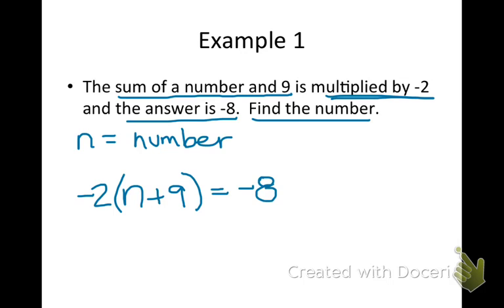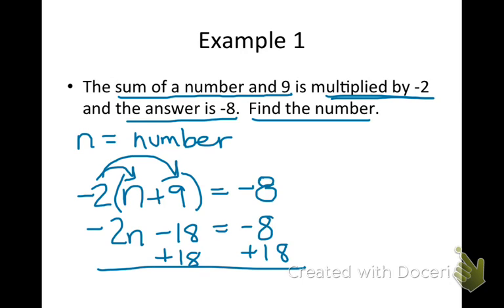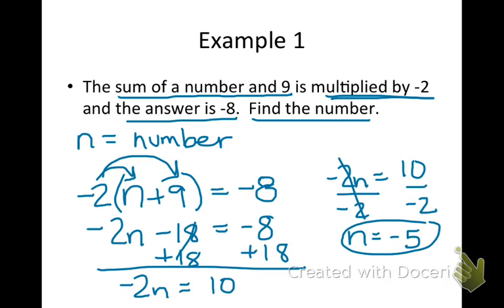And now you solve. So we'll distribute the negative 2 to both. So negative 2n minus 18 is equal to negative 8. We'll undo the subtraction through addition on both sides. Bring down the negative 2n, and negative 8 plus 18 is a positive 10. The last step is to divide by negative 2 on both sides. And n will be equal to negative 5. And then you could check that by putting it back into the original equation.